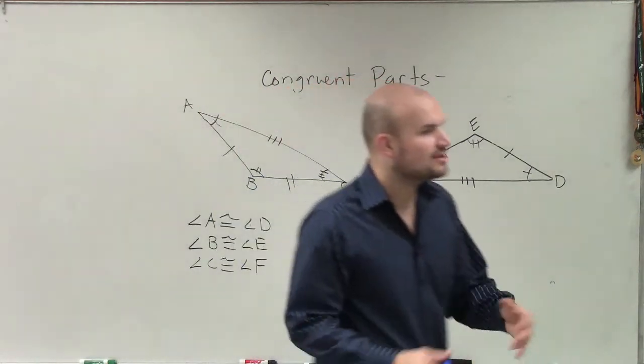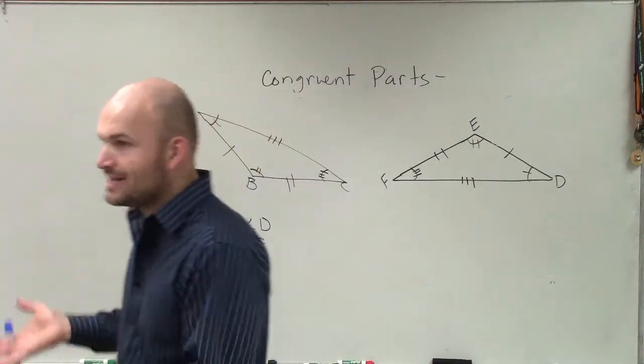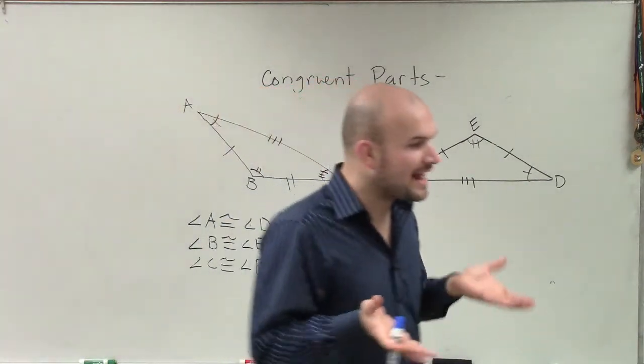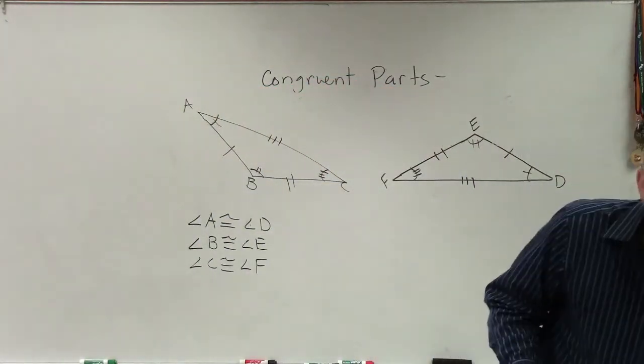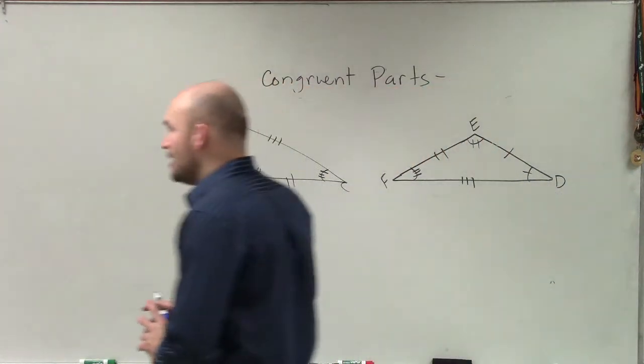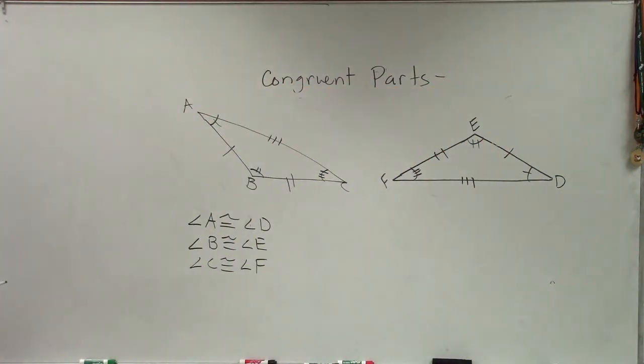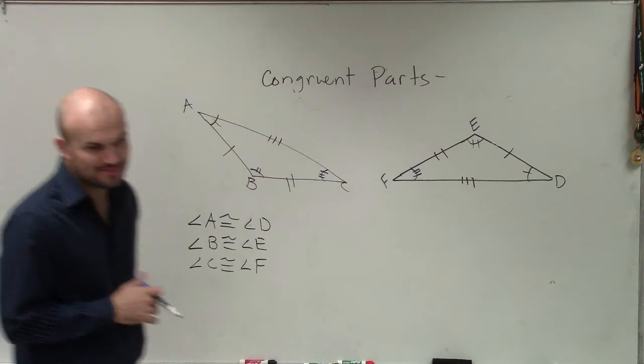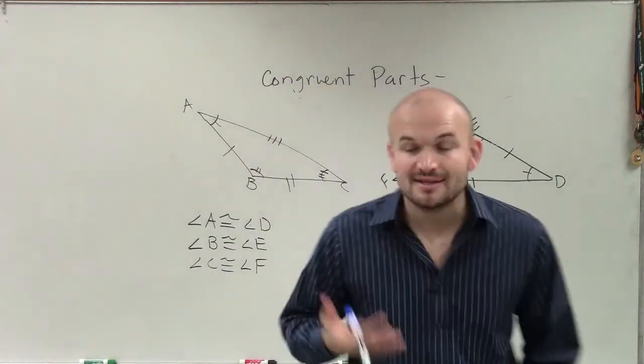But corresponding parts, ladies and gentlemen, are not just limited to angles. Because remember, if you were going to have two congruent triangles, you have to have the angles equal in measure, but as well as, what else? What else has to be congruent? Not just the angles, the sides.